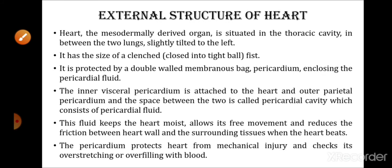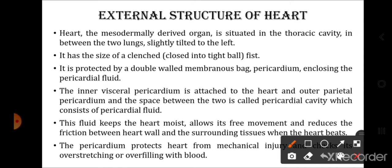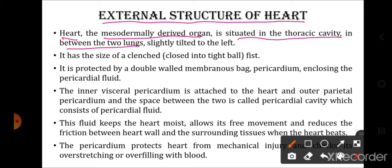In today's video we will be dealing with the structure of the heart. First, let us study the external structure. The heart is a mesodermally derived organ situated in the thoracic cavity between the two lungs, slightly tilted to the left. It has a size of a clenched fist — that is, like a tight ball.